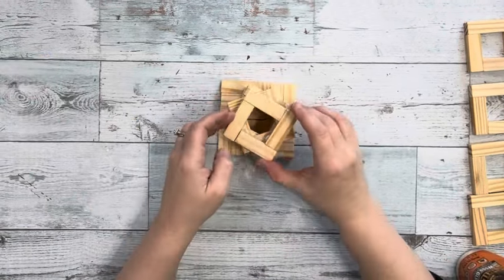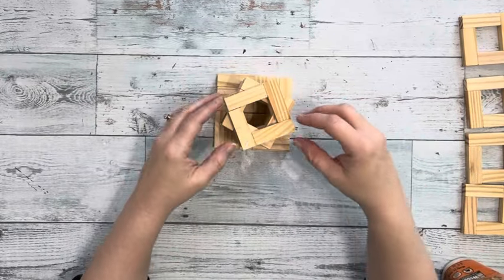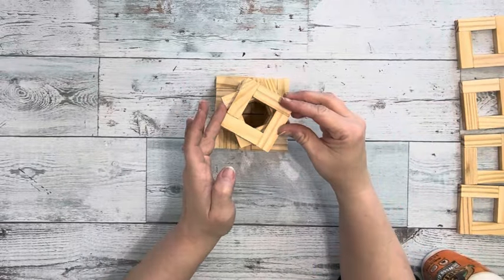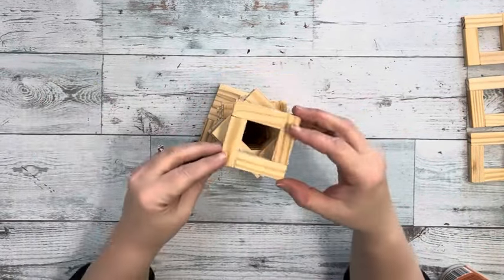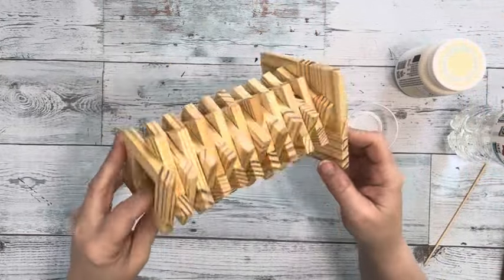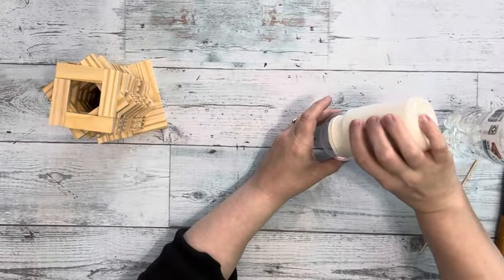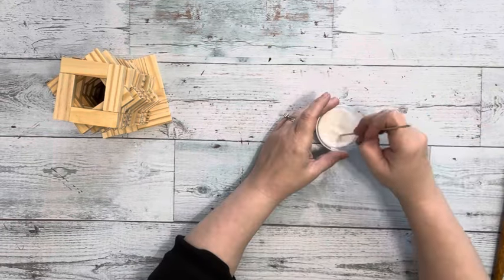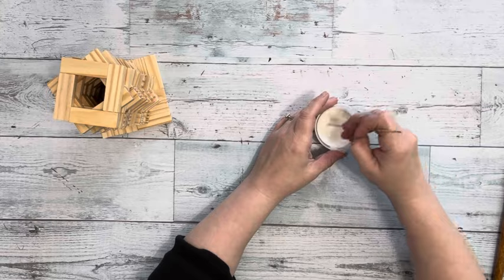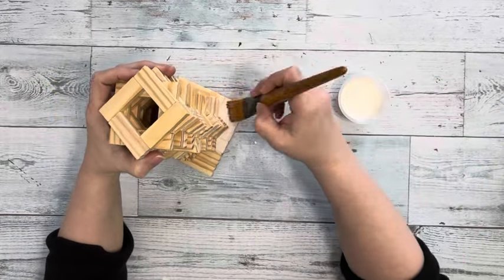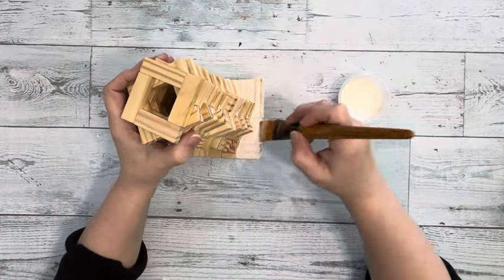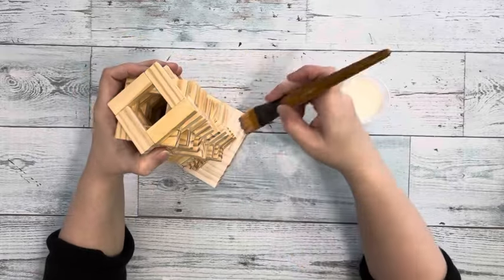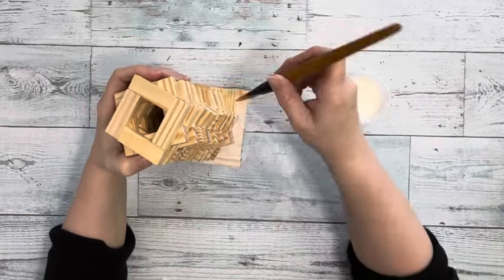Then after I have them all stacked together and glued, I let that dry again for another hour before I paint it. Once I let that dry for the hour I take Ivory Chalk Paint by Waverly and mix that with equal parts water. I mix it up completely just to give it a nice whitewash look and I brush that on giving it two coats.